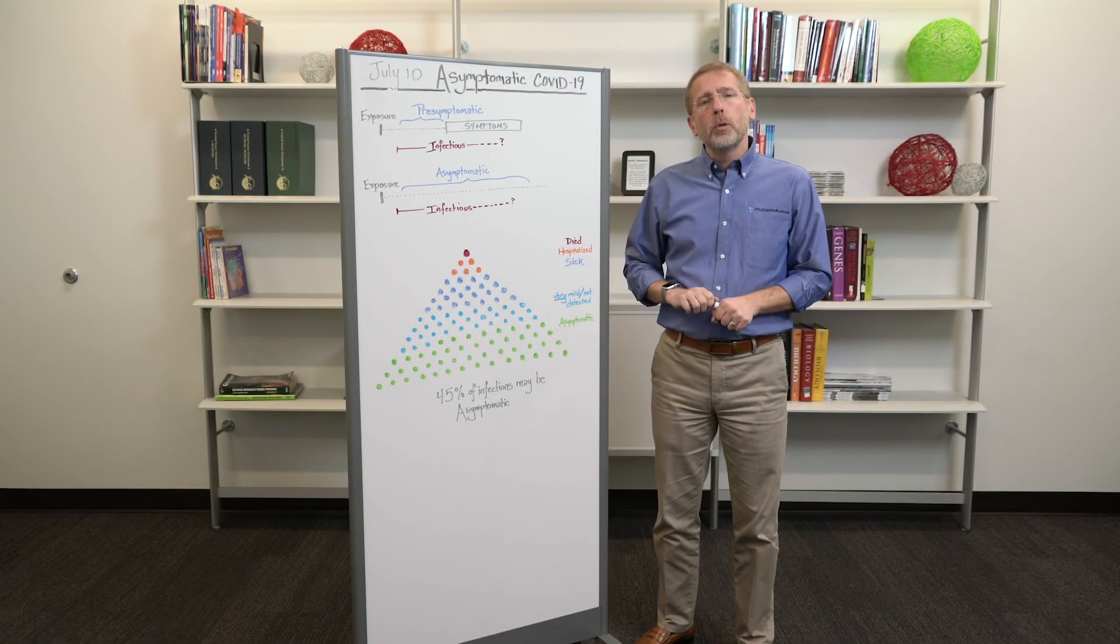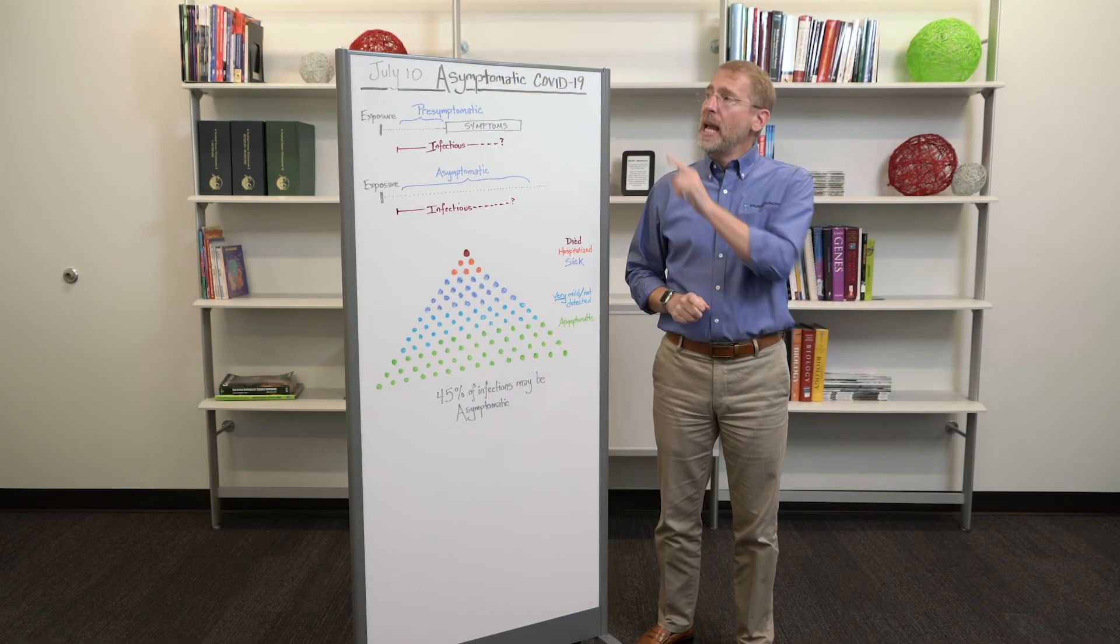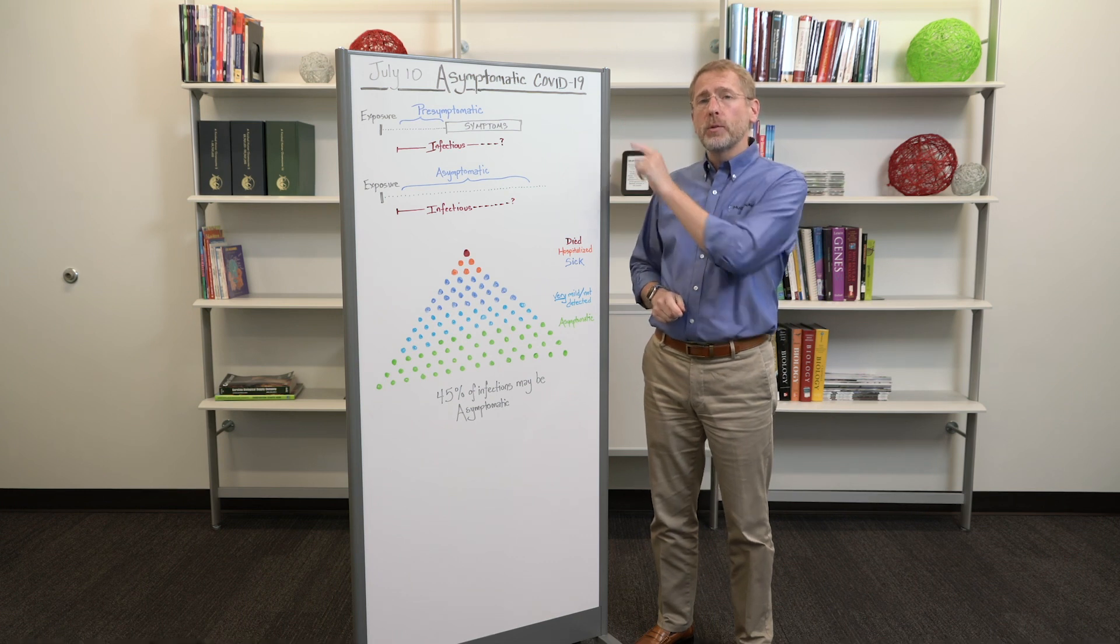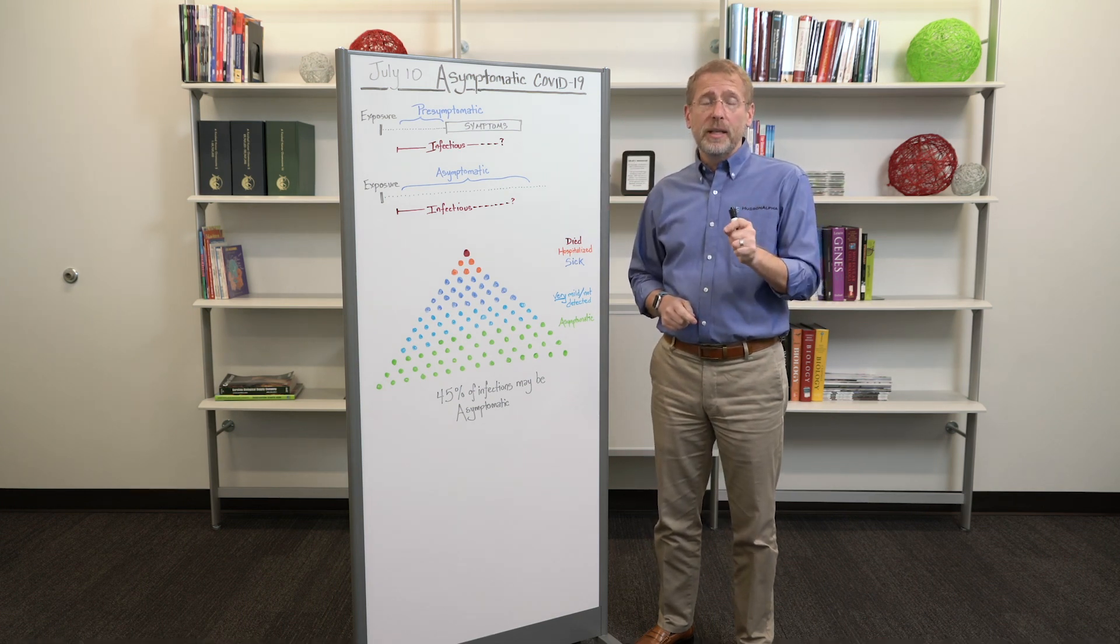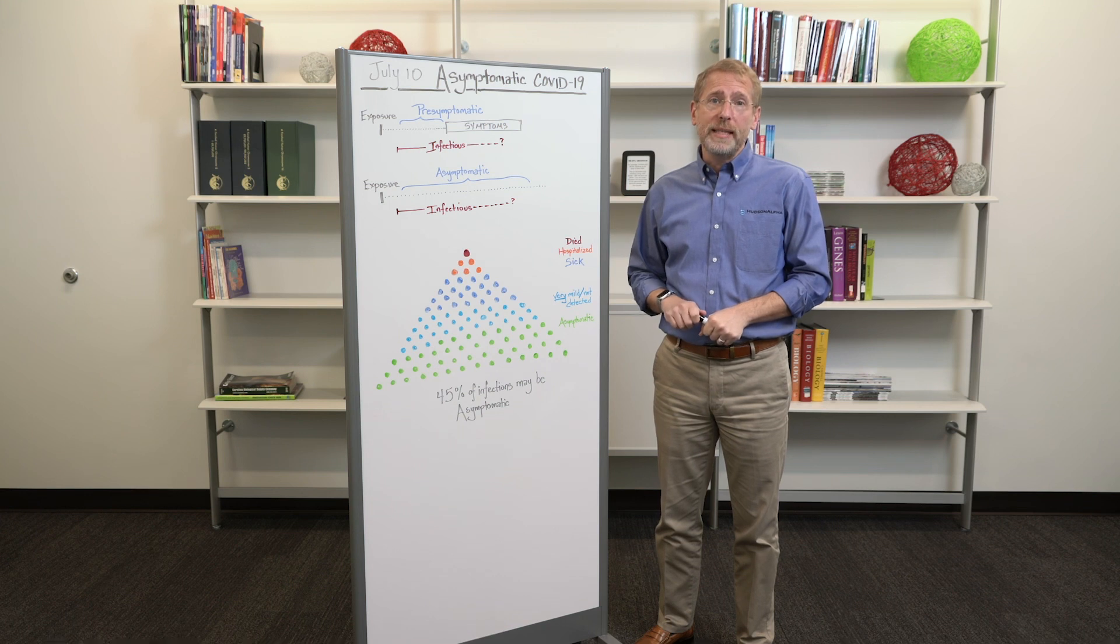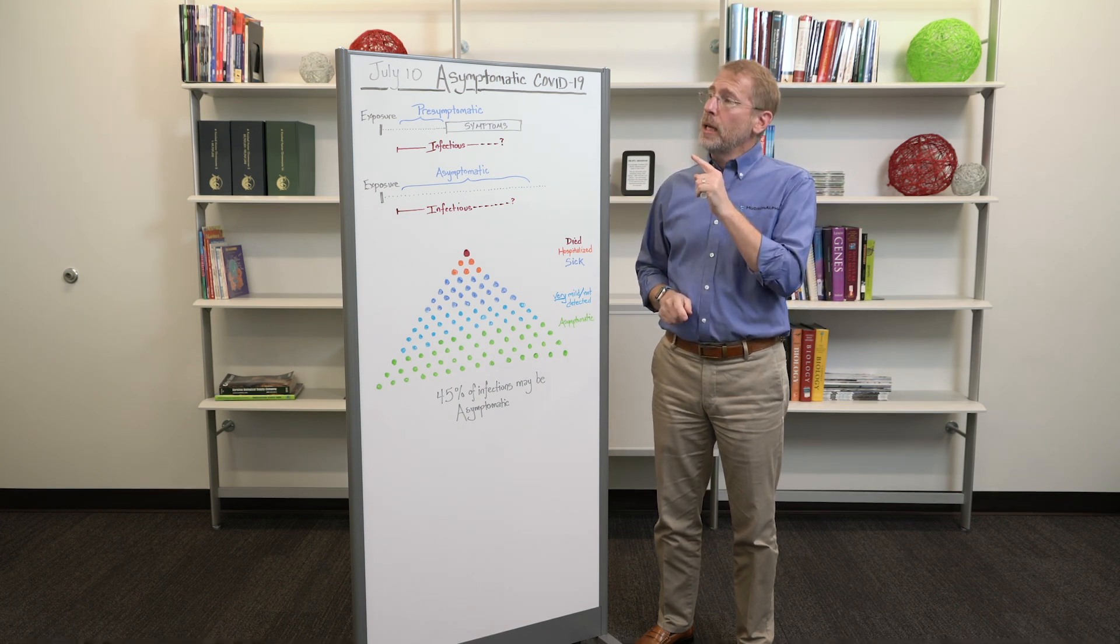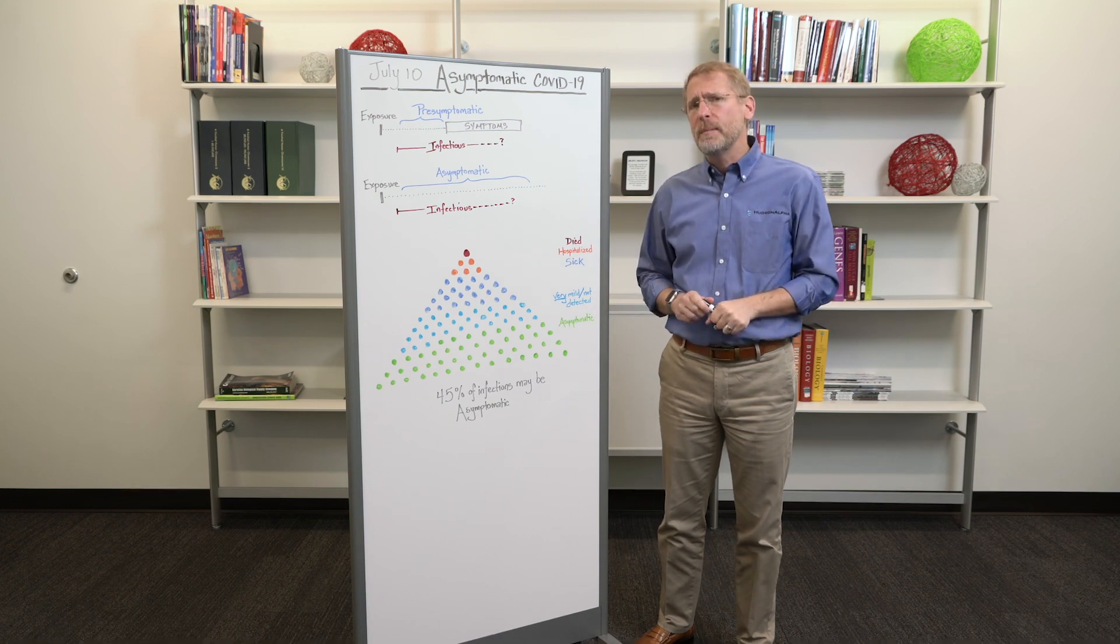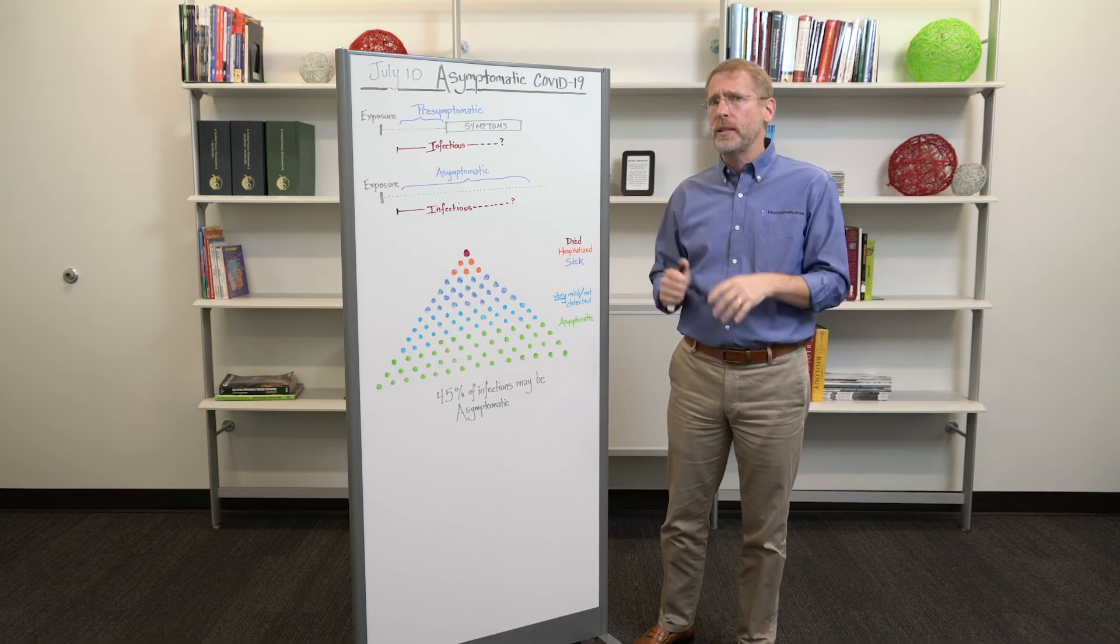A recent medical journal published an editorial that described asymptomatic individuals as the Achilles heel in our current attempt to control the spread of COVID-19. What's the difference between symptomatic, pre-symptomatic, and asymptomatic? And why is that even an issue?